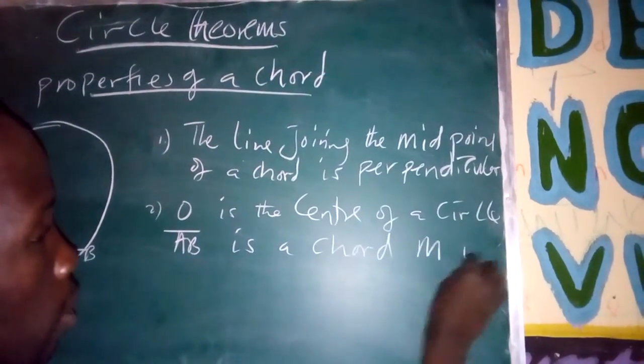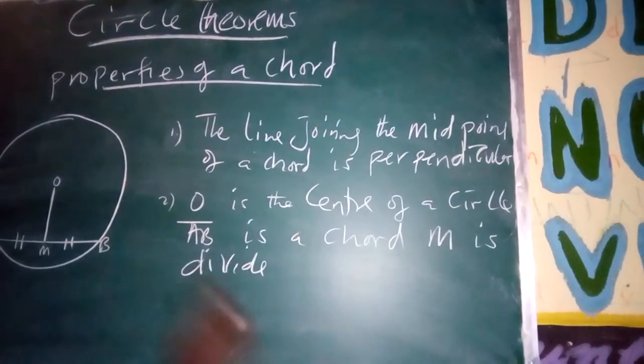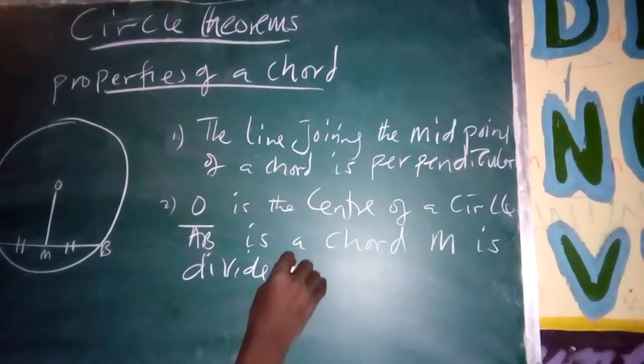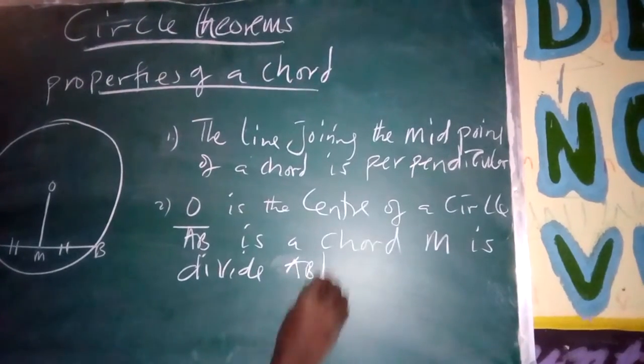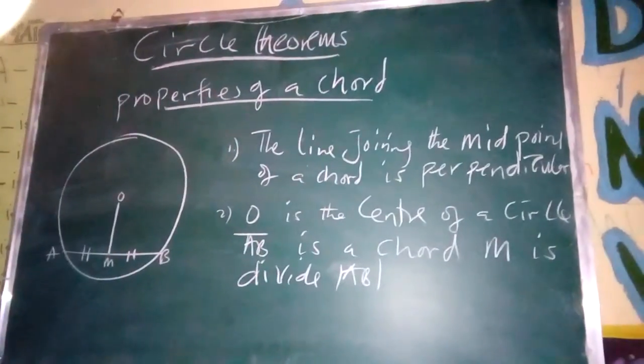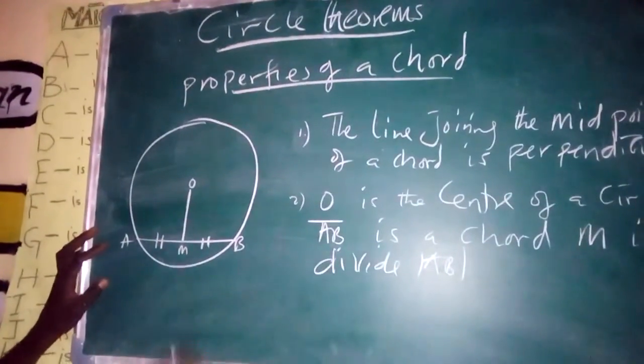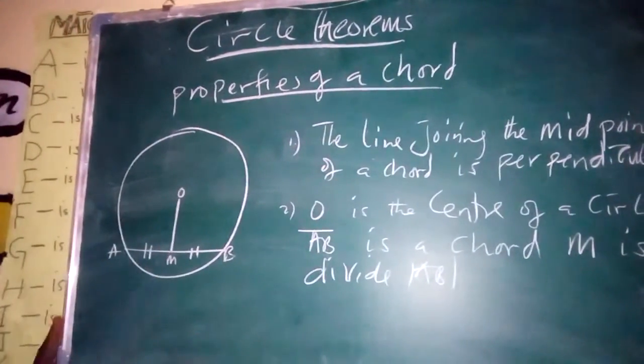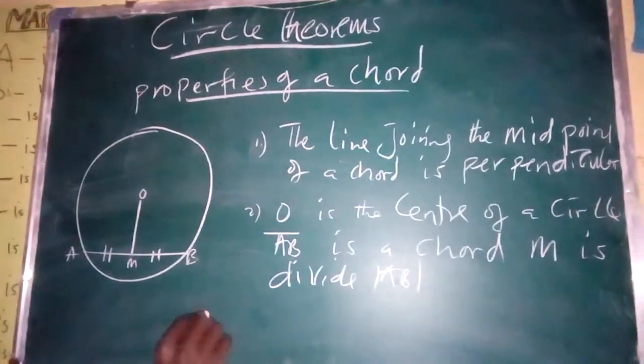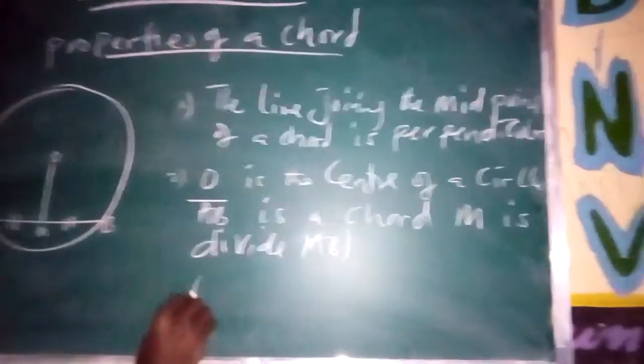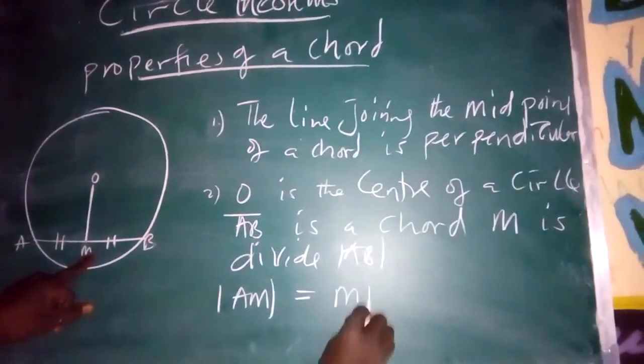M divides AB. This AB is a chord and this is a midpoint that divides AB. From A to M is equal to M to B.